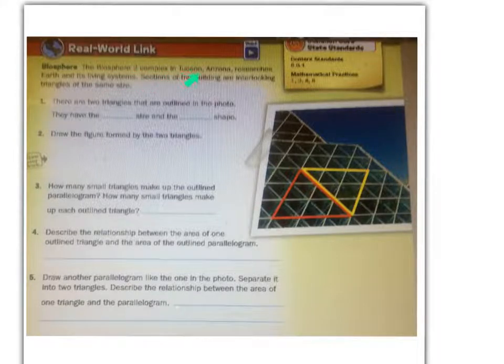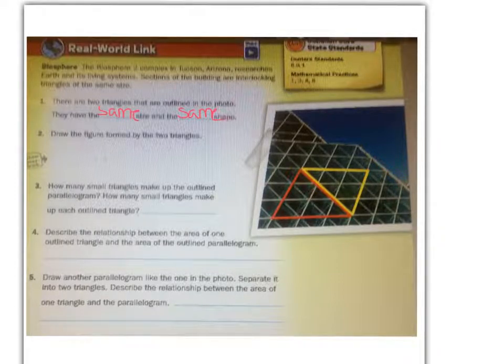The Biosphere 2 complex in Tucson, Arizona researches earth and its living systems. Sections of the building are interlocking triangles of the same size. There are two triangles that are outlined in the photo. They have the same size and the same shape. Draw the figure that is formed by the two triangles. Please draw what you think the figure is in this space right here. See how it compares to mine.